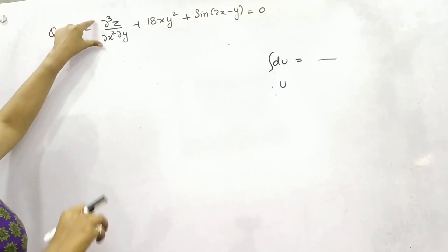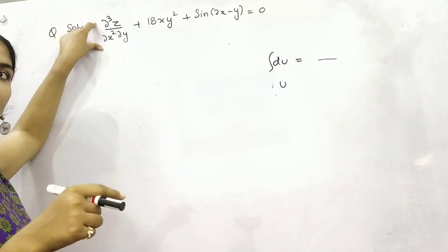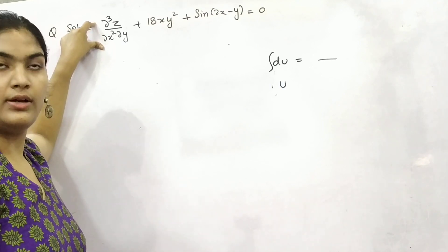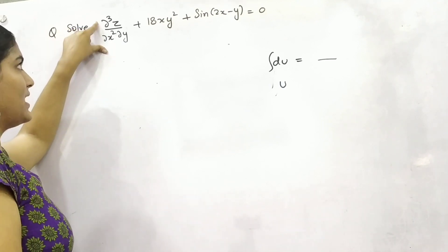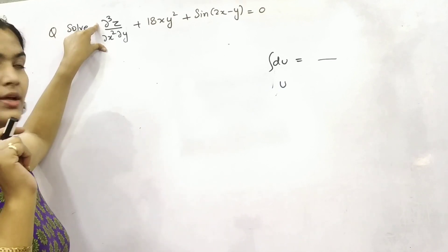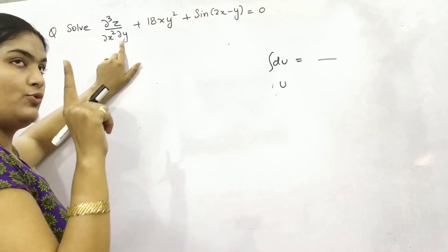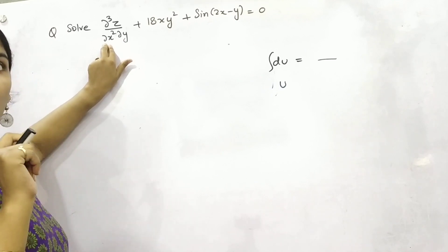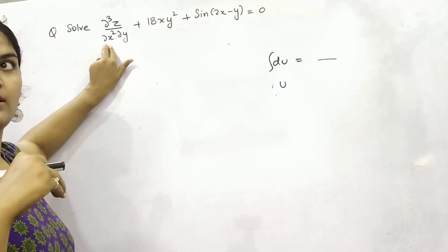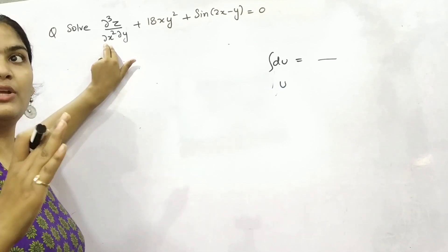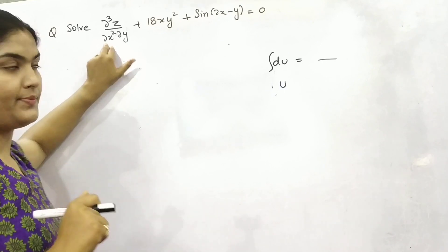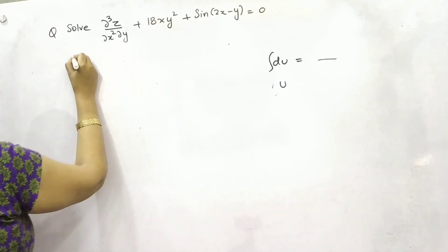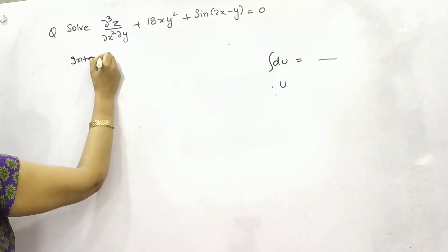What you need to do is integrate as many times as the partial differentiation order — so integrate 3 times. With respect to what? With respect to 1 time y and 2 times x, then only will you be able to get the function, so as to remove the partial differentiation operator. First of all, integrate with respect to x.